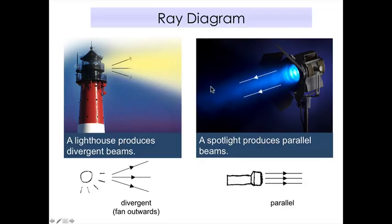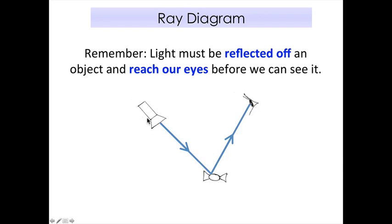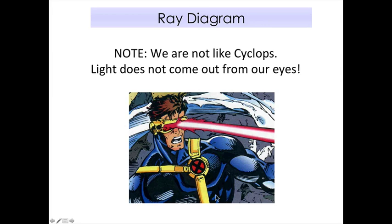You can see the light rays going this way in the diagram. Remember that light must be reflected off an object and reach our eyes before we can see it. With a torch, a candy, and an eye, the light ray must come out, bounce off, and then go to our eye. We do not draw the light ray coming out of the eye — light goes into our eyes, not out. The only person with light coming out of their eyes is Cyclops, a fictional character.